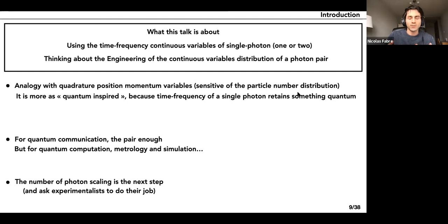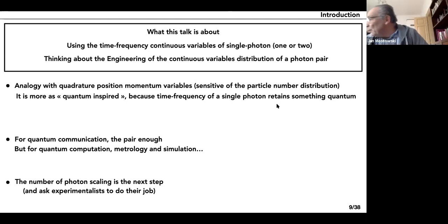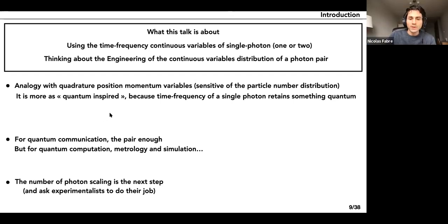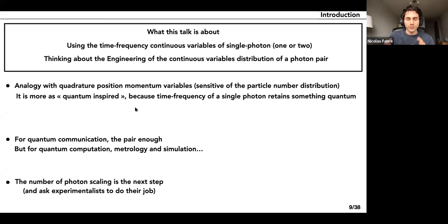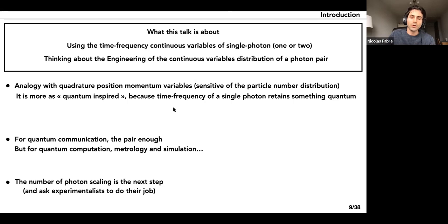After this introduction exhibiting the many ways to encode quantum information, this talk is about time-frequency continuous variables of single photons — or photon pairs, since two-photon states are more useful. I will think about smart engineering of the continuous variable distribution of the photon pair. Since single or two-photon states have continuous variable distributions, I will draw the analogy with quadrature position-momentum variables, which is physically completely different because it is sensitive to the particle number distribution with the mode fixed. For quantum communication, a photon pair is enough, but for quantum computation, metrology, and simulation, a pair is not sufficient, and I will address number scaling later.